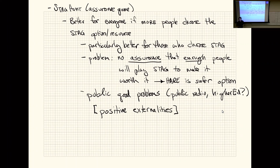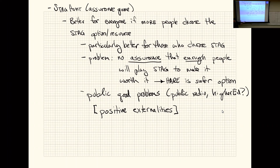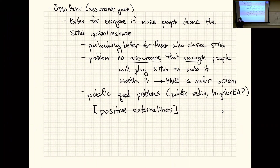This is where you get extreme positive externalities. One way to get everyone to pay for public goods — as relevant to today being tax day — is taxes. If you fund a public good through taxes, that resolves the problem: everyone in society agrees the thing is good, a central government says you're all going to pay for it, and as long as the charge isn't too much, everyone can be okay with that.